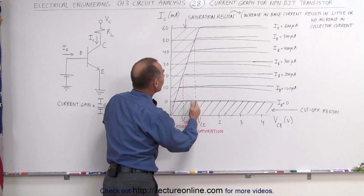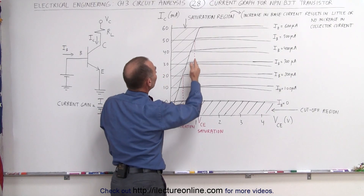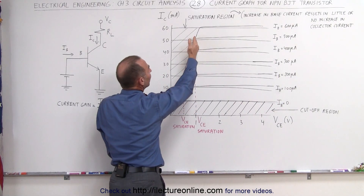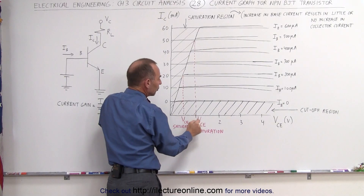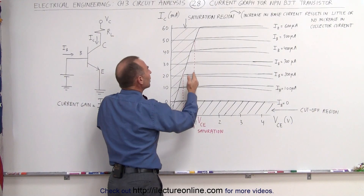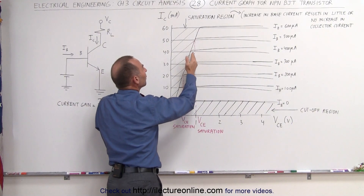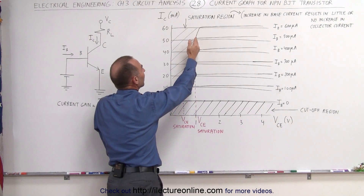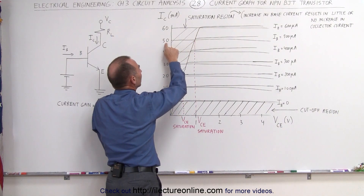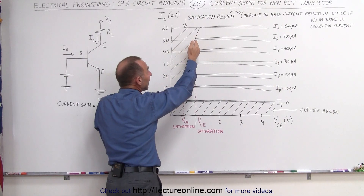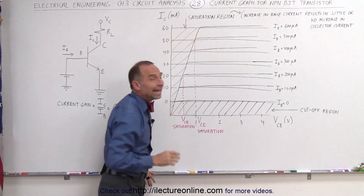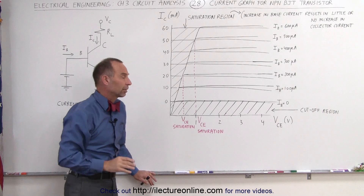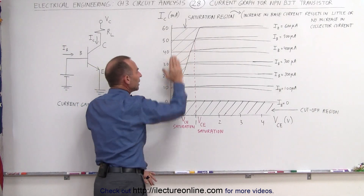At a greater voltage, the saturation region occurs at a much higher base current. At one volt between collector and emitter, you can keep increasing base current up to 500 microamps to get 50 milliamps at the collector. But if you then try to increase the base current further, there will no longer be an increase in the collector current, so you don't want to operate there.